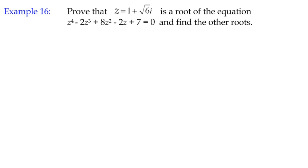We're on the complex numbers topic, looking at the fundamental theorem of algebra, which says that for any polynomial equation — like this one — if the highest power is z to the power of 4, it's a quartic equation, so we're guaranteed 4 solutions, real or complex. We also saw in example 15 that if one complex number is a solution, its conjugate is guaranteed to be a solution too, so complex solutions always come in pairs.